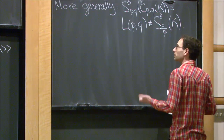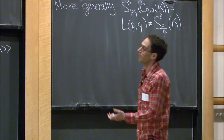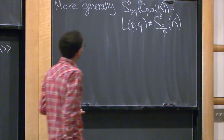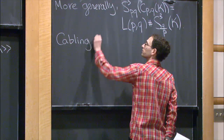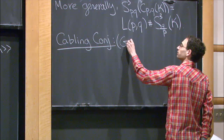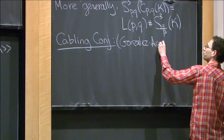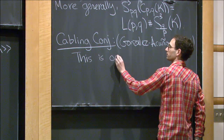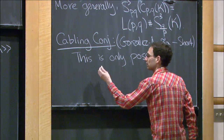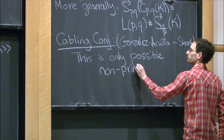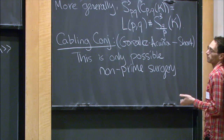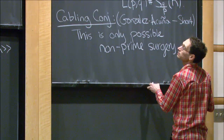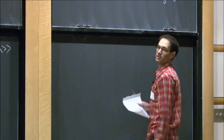A natural question: how else can we get reducible manifolds? Could we do surgery on a hyperbolic knot and get something reducible? The conjecture is that this is the only thing we can do—this is the Cabling Conjecture, due to González-Acuña and Short. It says the only way we can get non-prime surgeries is if we started with a cable knot.